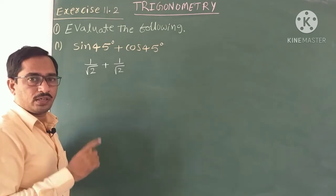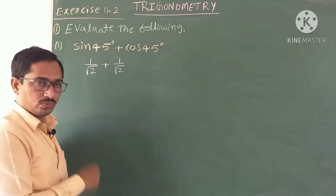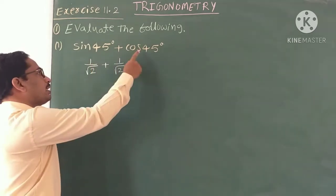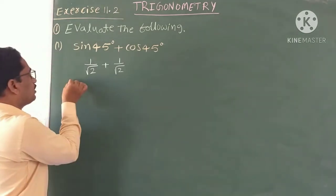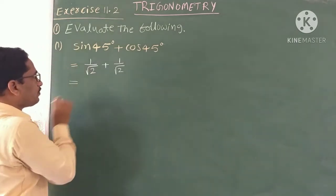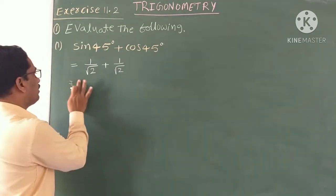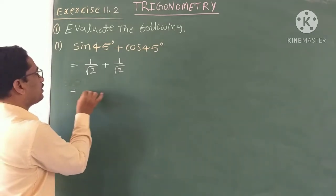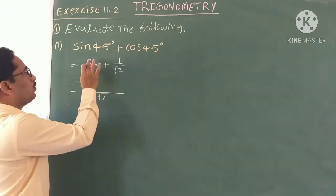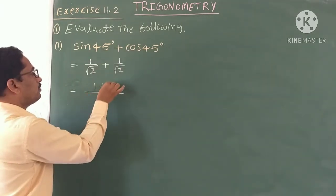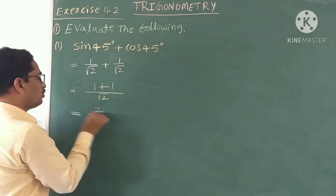Tan 45 and cot 45 are also the same: 1. Cosec 45 and sec 45 are also the same: root 2. Here sin 45 and cos 45 are both 1 by root 2. The denominators are the same, so find the sum of the numerators. The LCM is root 2, so 1 plus 1 gives 2 by root 2.